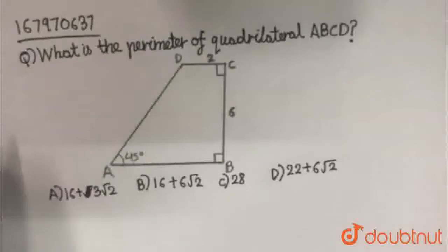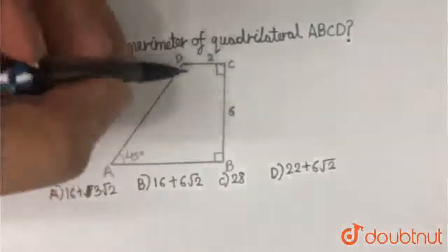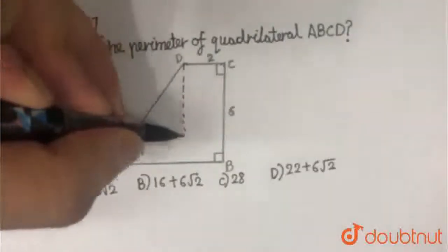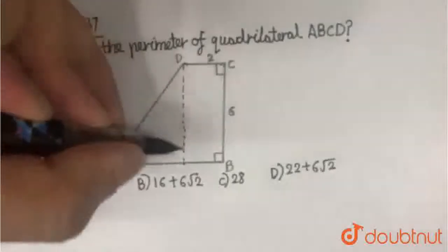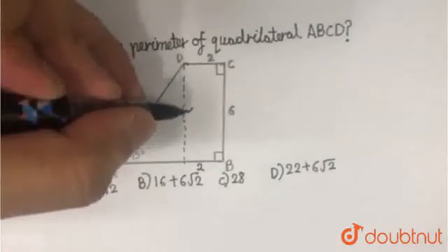What is the perimeter of quadrilateral ABCD? This is a very easy question. This is 2, this is 6. Draw a perpendicular from here. You will see it becomes a rectangle. So this will also be 2 and this will also be 6.